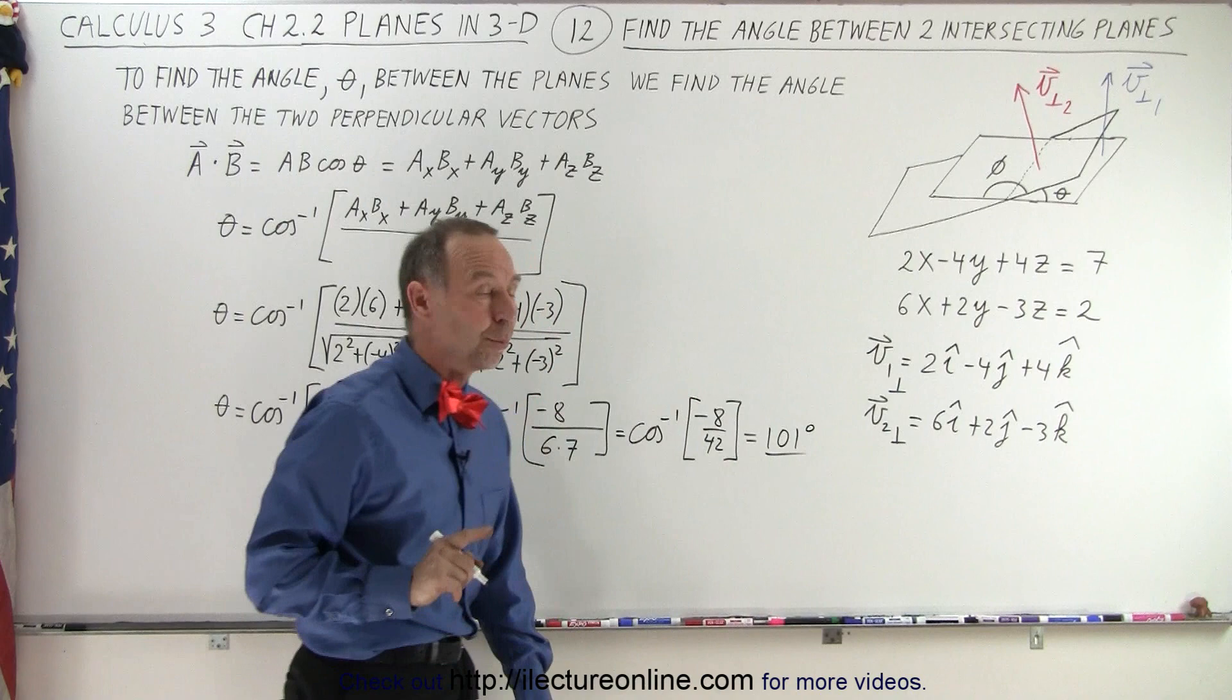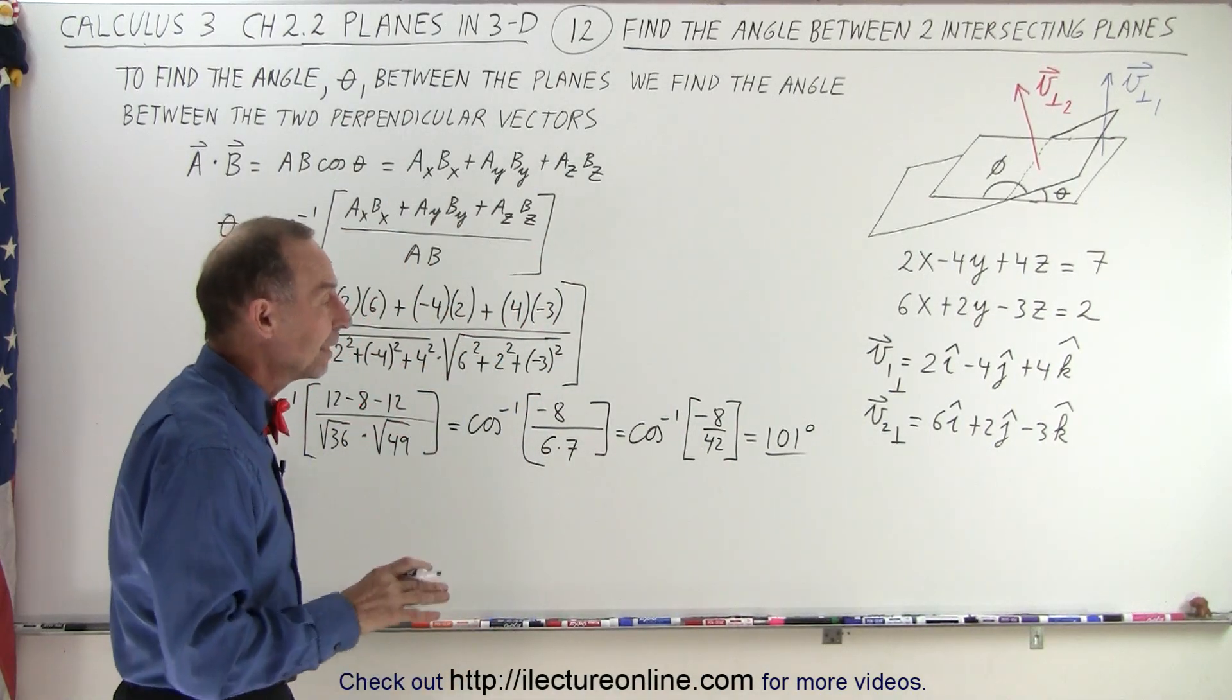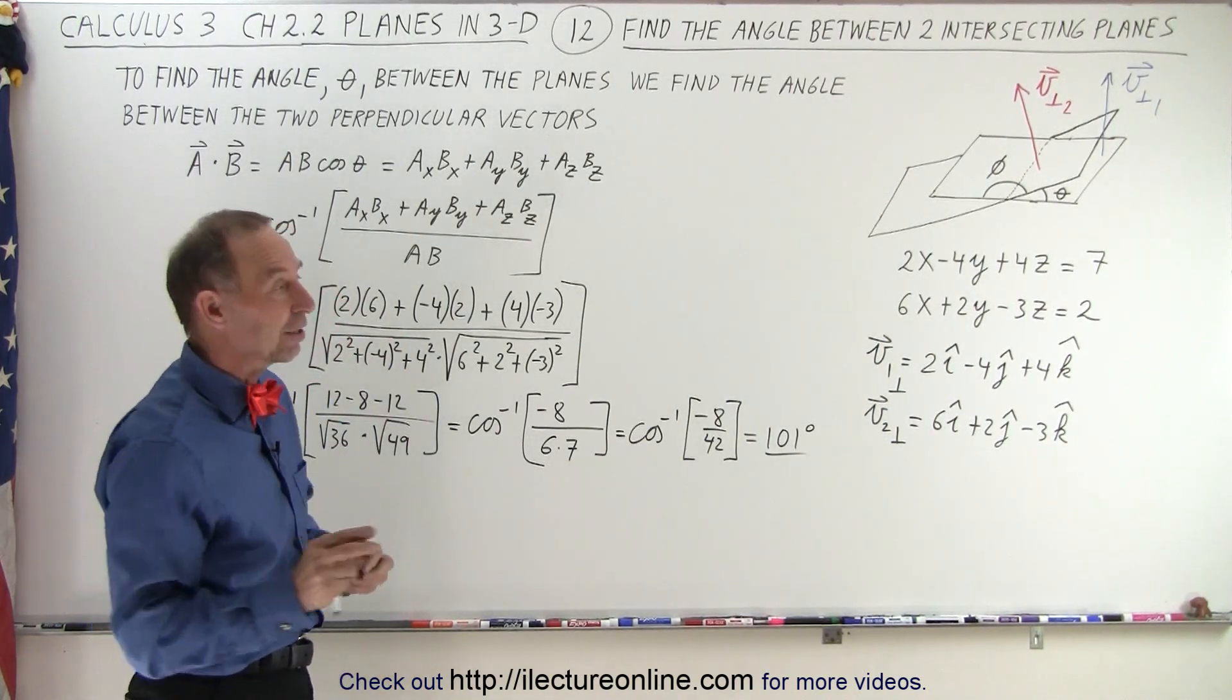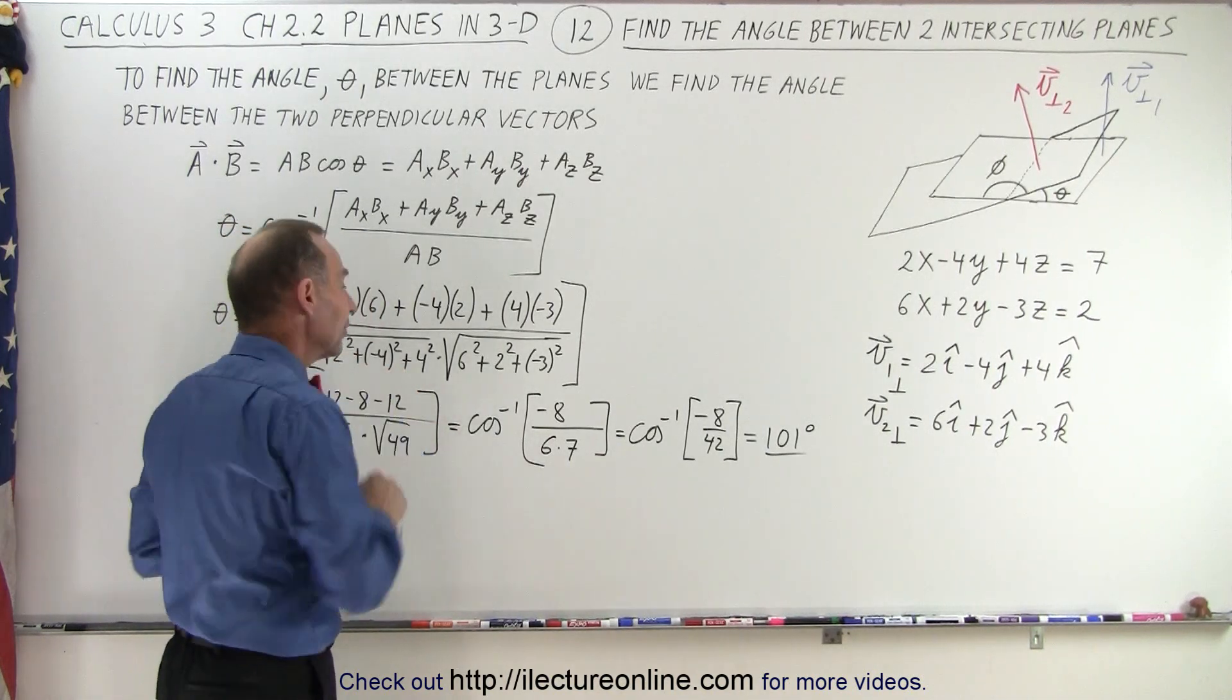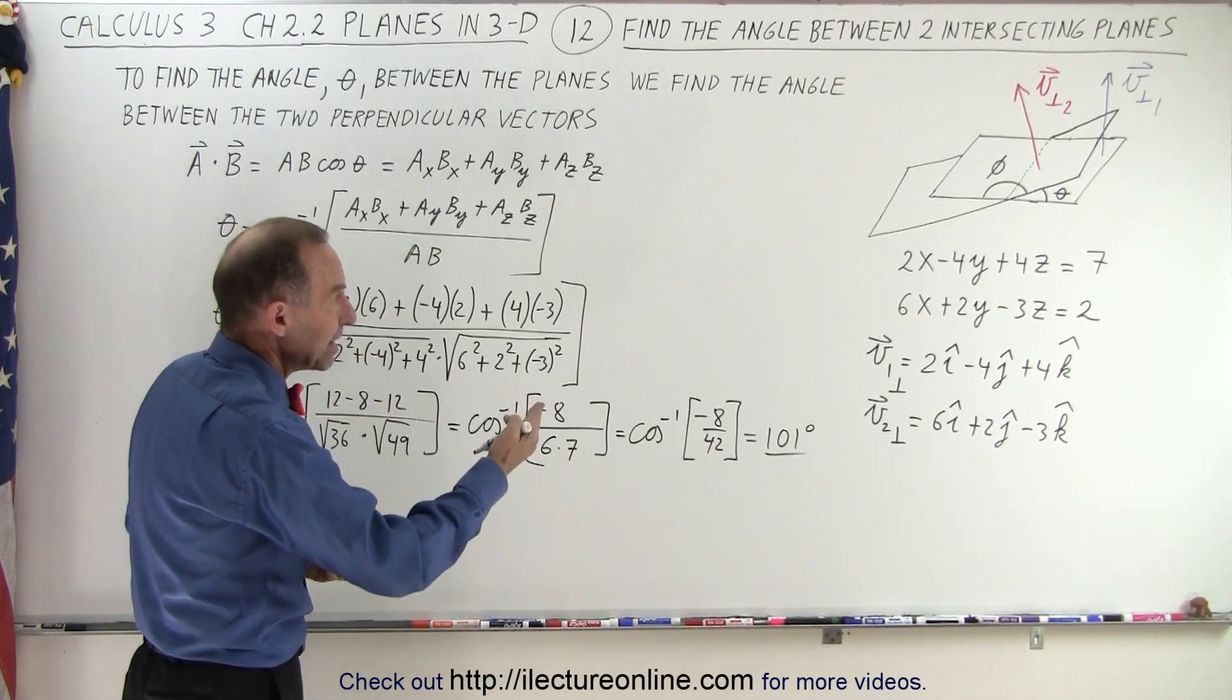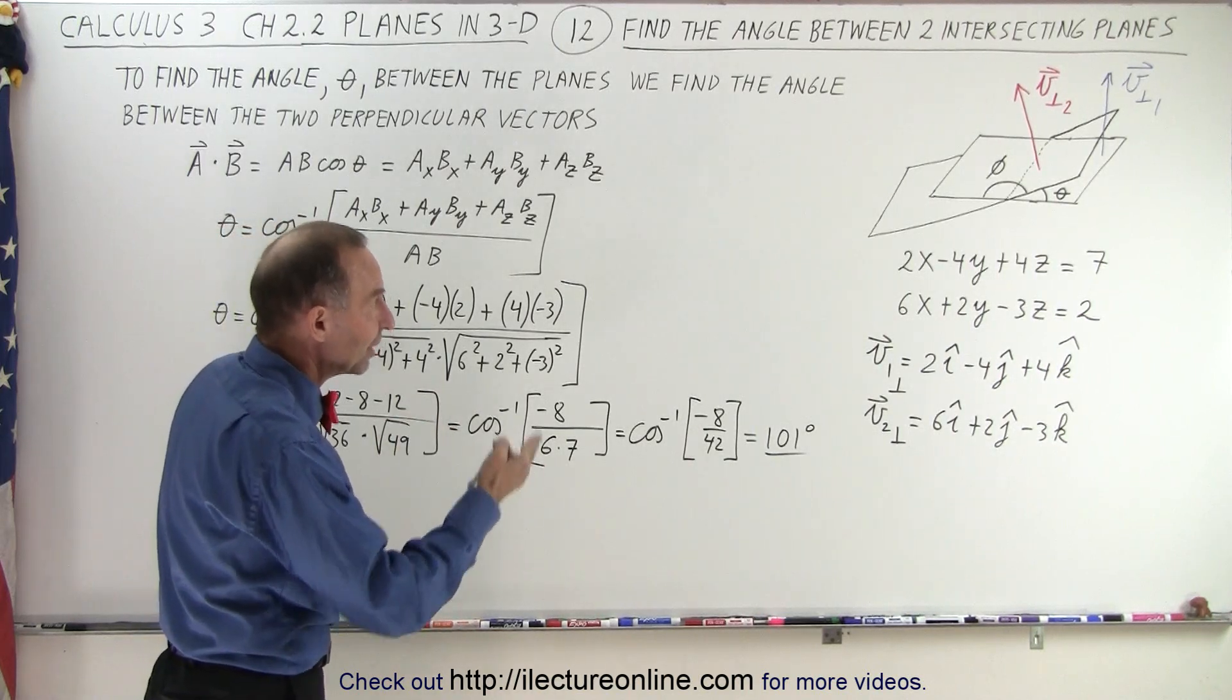Here's an example where we didn't find theta, we actually found phi. We can remedy that by taking the absolute value of this number, and then we would have found theta. So to make sure we find the acute angle, we can either take the absolute value of this amount and get the correct answer for theta, or here we realize we got the angle for phi, and therefore we're going to have to take 180 minus phi to get theta.